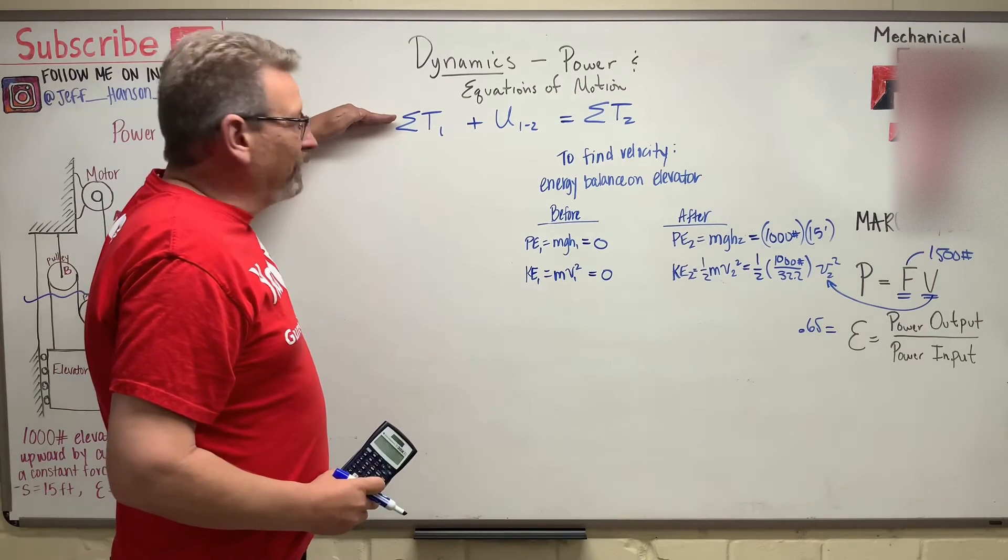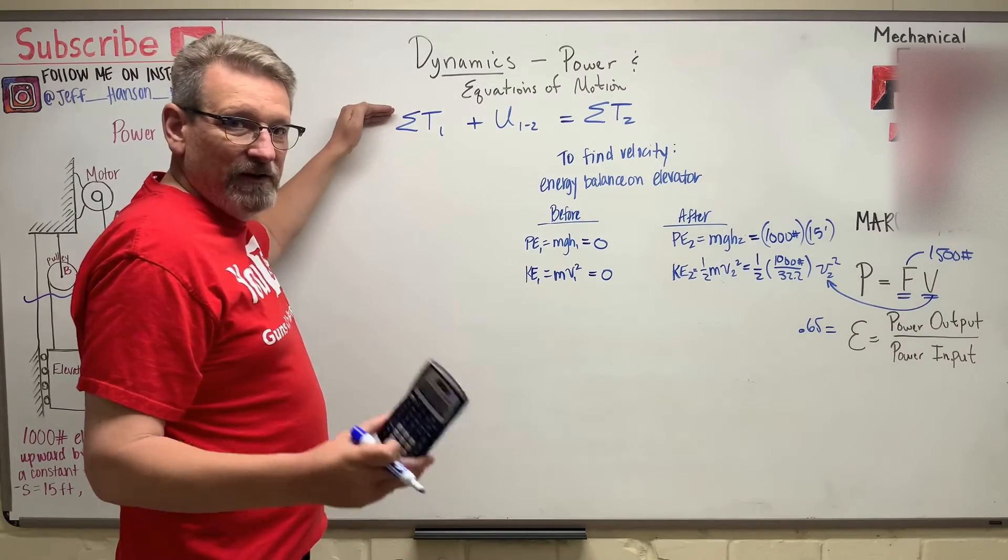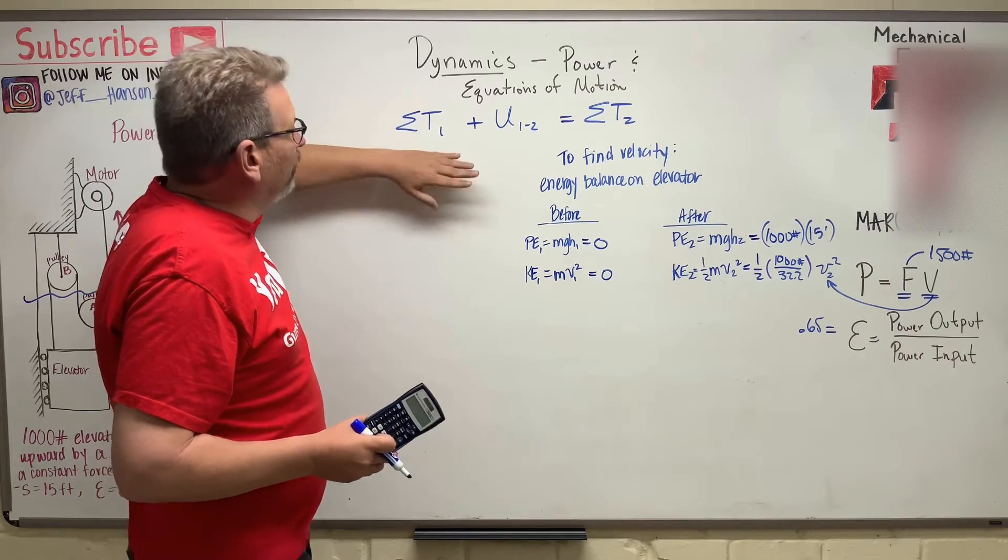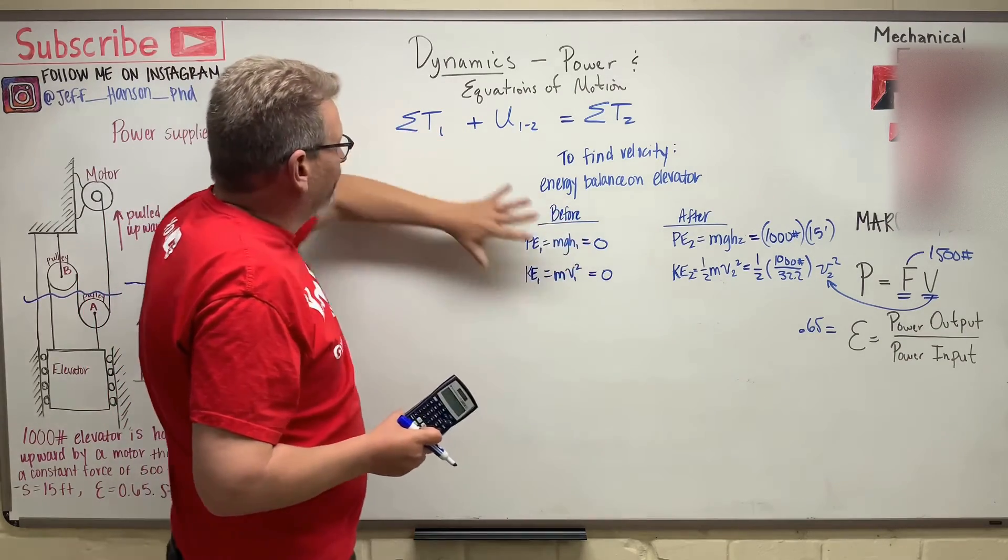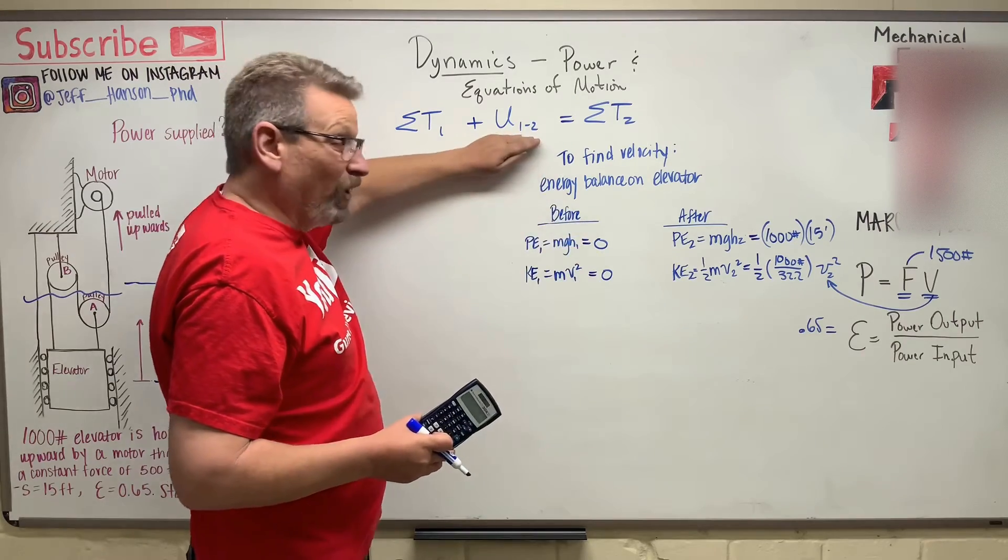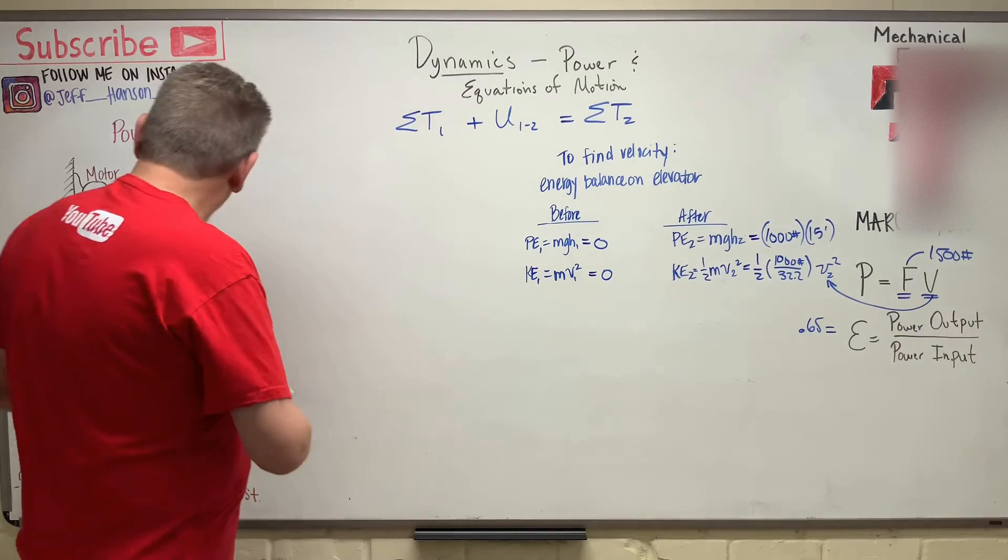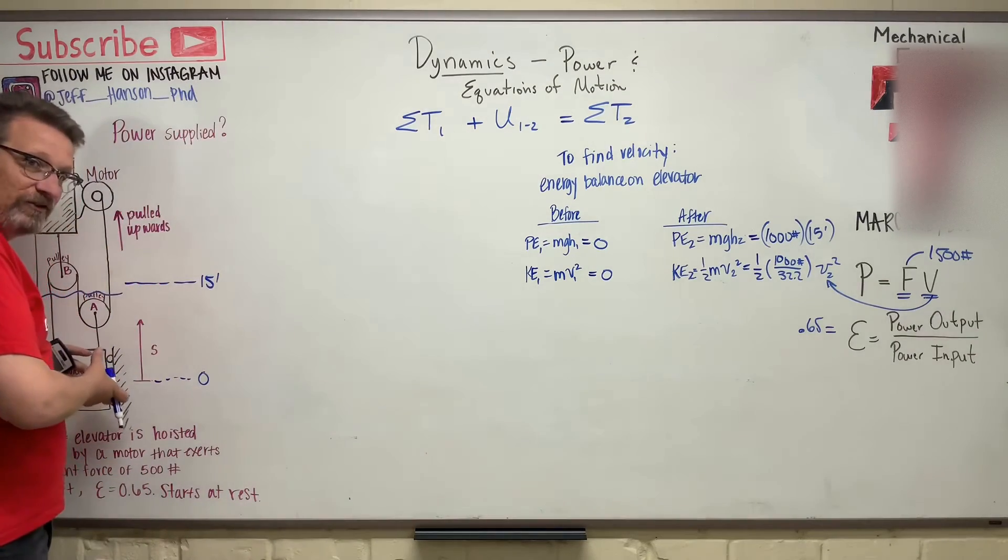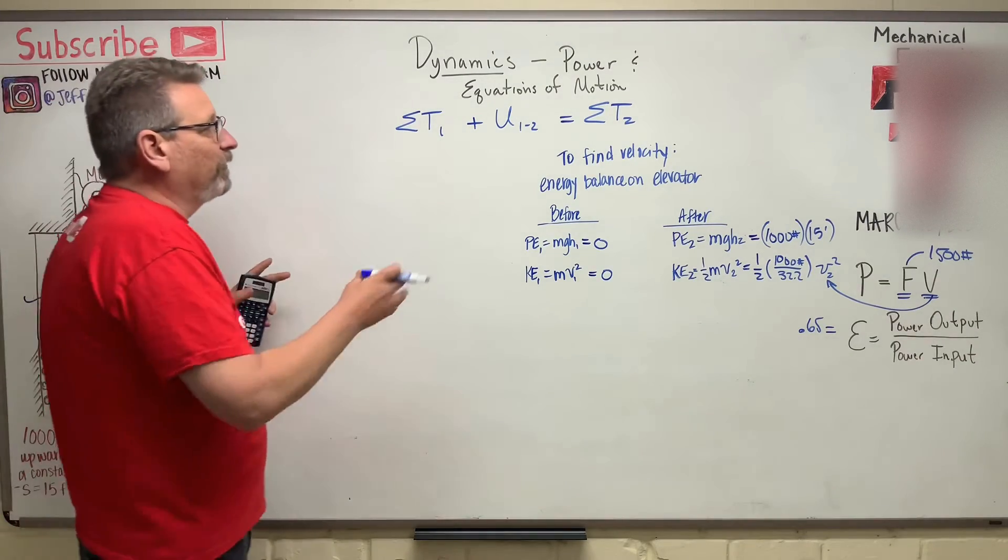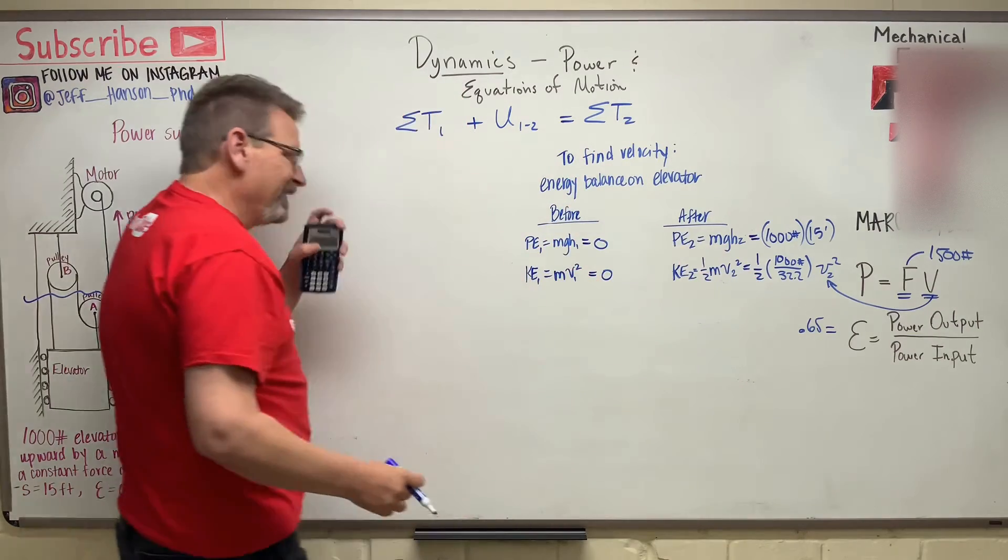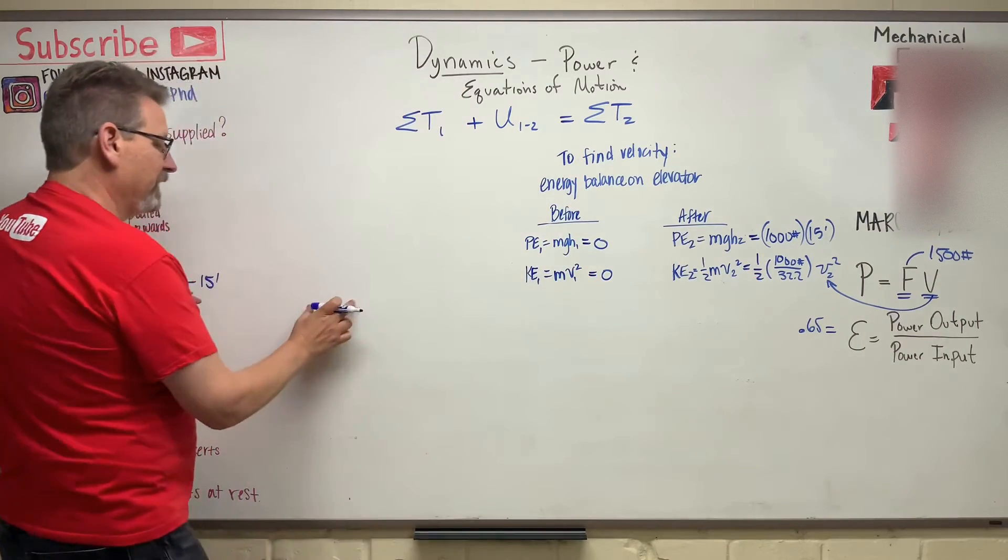This is from last chapter. If you didn't see this, go back and review it on the video before. The sum of the works before, I mean the energy before, that's this, plus the work, and what's work? That's force times distance. So how much force is exerted on the elevator times how far, and then the sum of the energy afterwards, which is all this over here added up. So let's write that equation here.